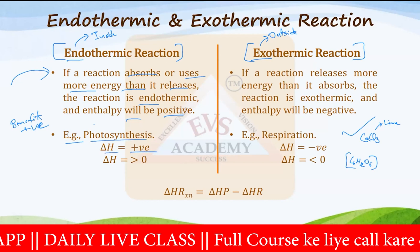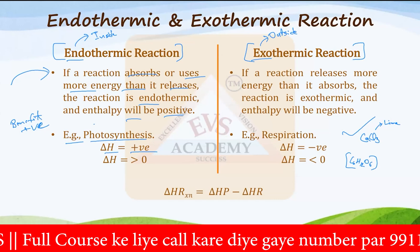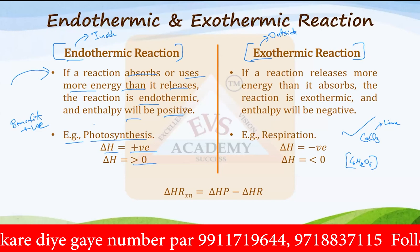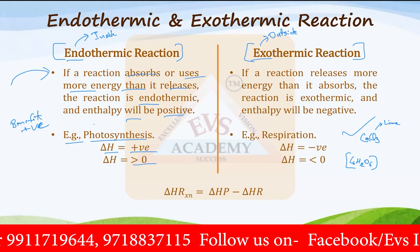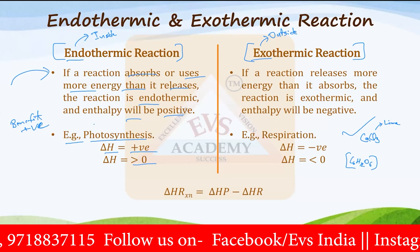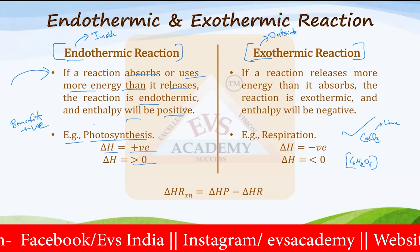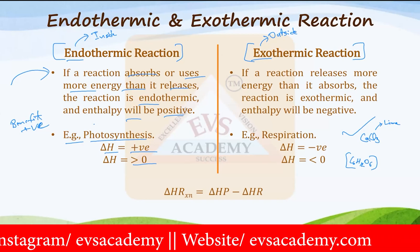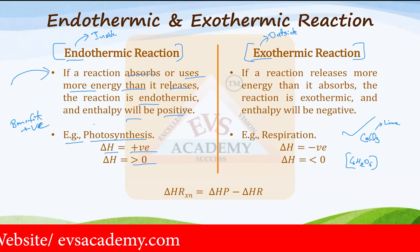Then we have another type of reaction — that is exothermic. It means you are giving energy by reaction to the surrounding or to the outer atmosphere. So if a reaction releases more energy than it absorbs, the reaction is exothermic. And enthalpy will be negative because energy is lost from the system to the surrounding — that's why delta H is negative, or less than zero.